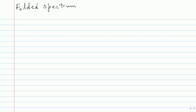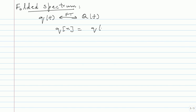The next thing we will worry about is the folded spectrum. Very often we will be sampling continuous time signals, and you should have a clear understanding of how the spectrum translates. I have a continuous time signal q of t with Fourier transform Q of F. I go ahead and sample this, defining sequence q(n) as q evaluated at time instances nT. T is my sampling time, so my sampling frequency is 1 over T samples per second.